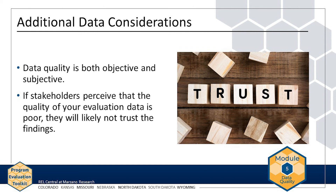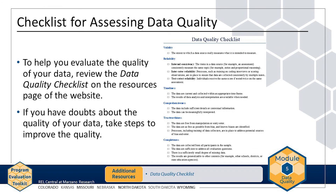Careful documentation of data collection procedures can help address these concerns. For example, the evaluation team might collect detailed logs of program activities related to recreational activities to share with skeptical stakeholders. To help you evaluate the quality of your data, review the handout, Data Quality Checklist, available on the Resources page of the website. This checklist includes a set of guiding questions you can ask to check the quality of each data source you plan to include in your evaluation.